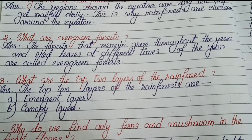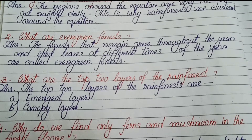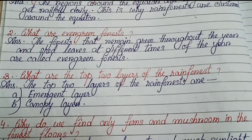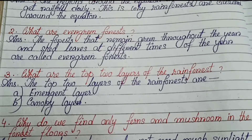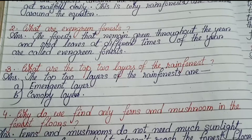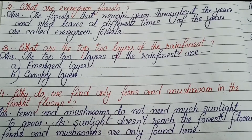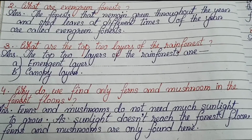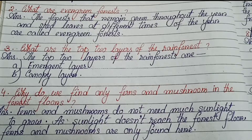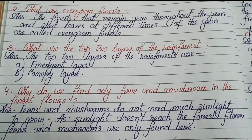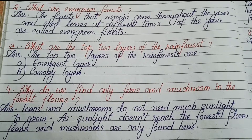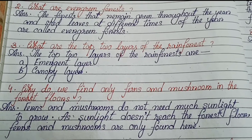Number 2: What are evergreen forests? The forests that remain green throughout the year and shed leaves at different times of the year are called evergreen forests. Number 3: What are the top two layers of the rainforest? The top two layers of the rainforest are: A — the emergent layer, and B — the canopy layer.